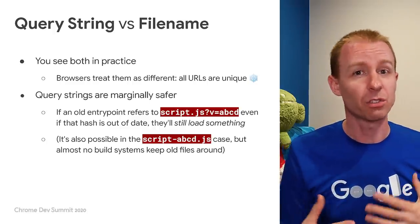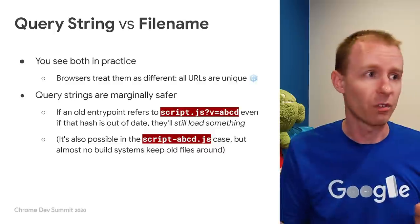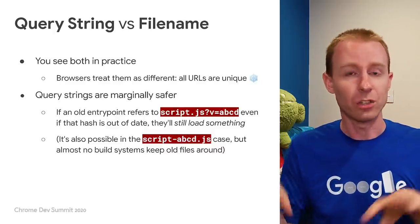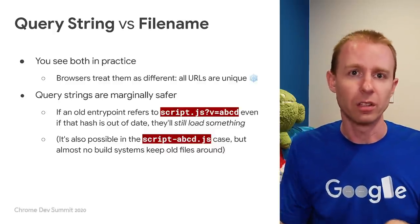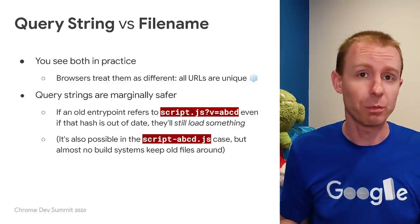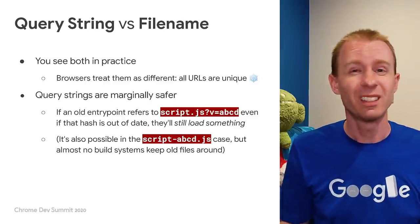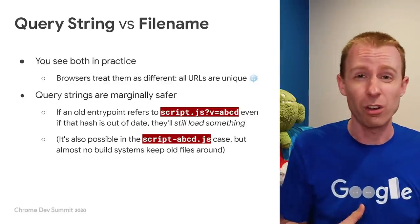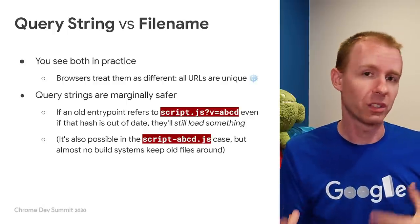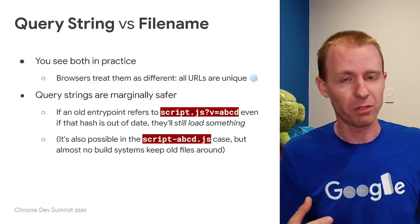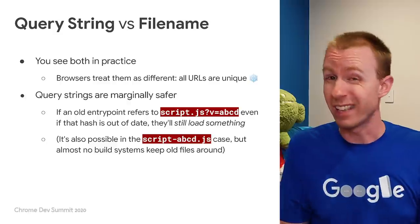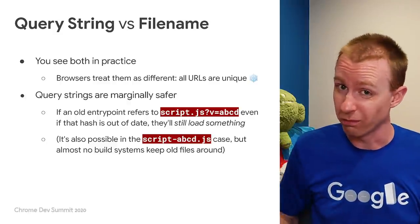You might think that just renaming a file works the same way — you have an old version and a new version. But in my experience, most build systems and most development environments don't encourage you to keep around those old files. So in fact it's kind of dangerous, because if you have an HTML file referencing the old name, that old file is probably now completely gone.